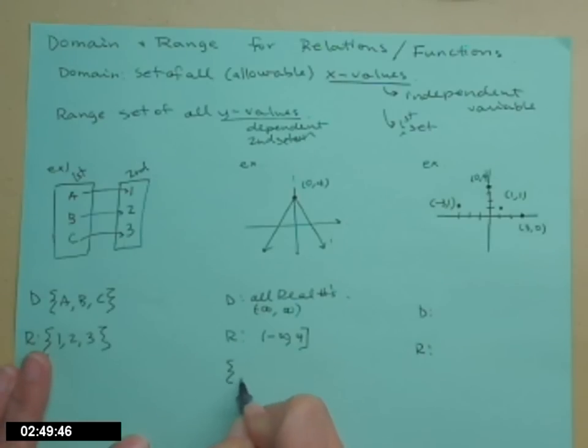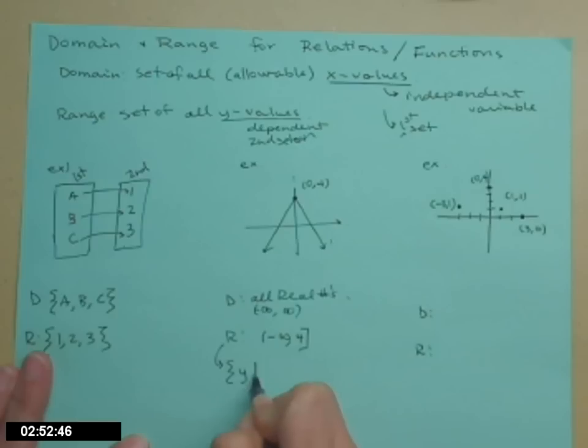If you used set builder notation for the range, you would write a set of all y's such that y is less than or equal to negative 4. Set builder, we use the curly Q brackets.